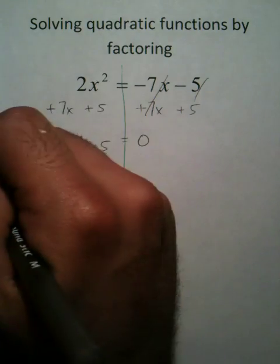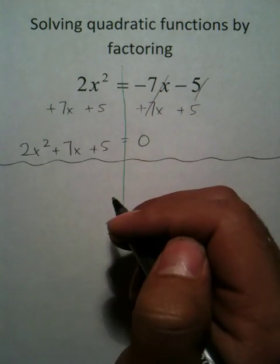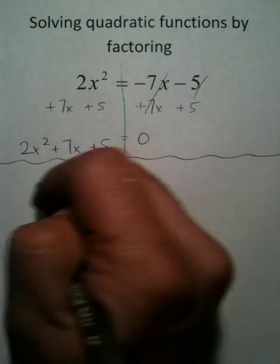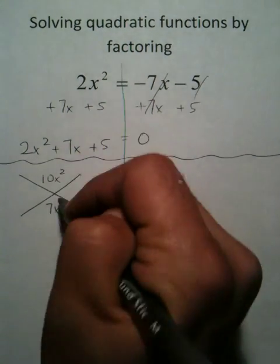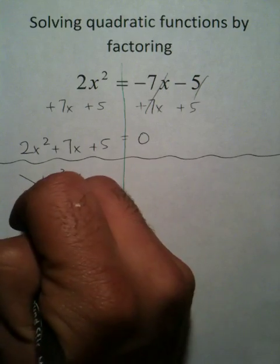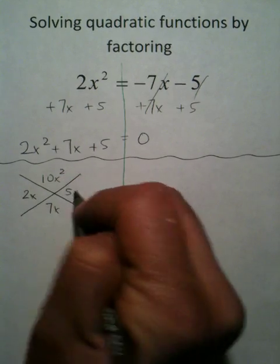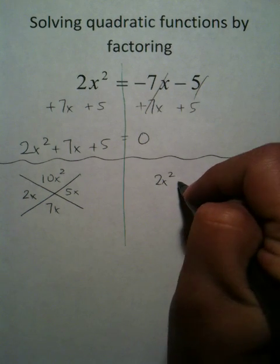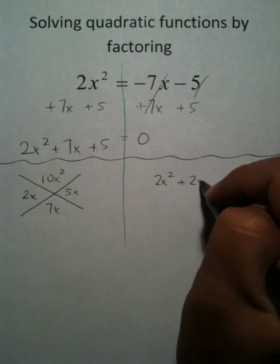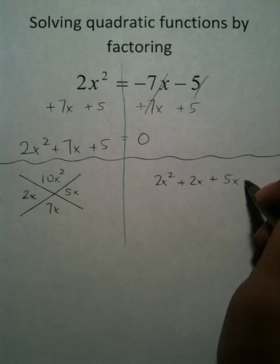I'm going to need a little bit of scratch work, because I'm going to have to factor this using the magic x. Multiply your first and last terms together. Take your middle term, two numbers that multiply, 2x, 5x. You have 2x squared plus 2x plus 5x plus 5.